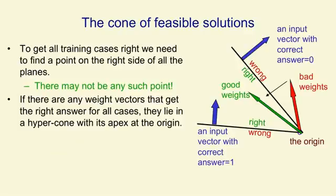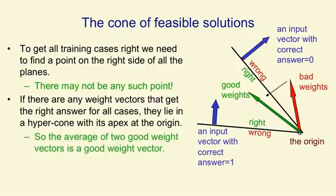One thing to notice is that if you get a good weight vector, that is something that works for all the training cases, it'll lie in the cone. And if you get another one, it'll lie in the cone. And so if you take the average of those two weight vectors, that will also lie in the cone. That means the problem's convex. The average of two solutions is itself a solution. And in general, machine learning, if you can get a convex learning problem, that makes life easy.